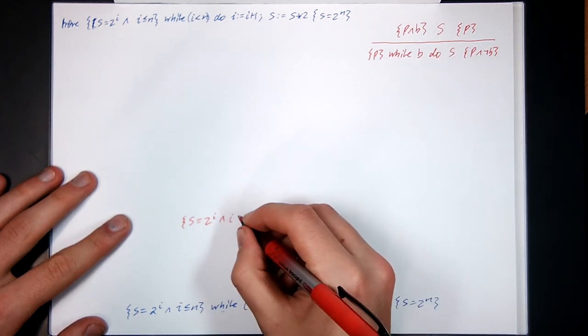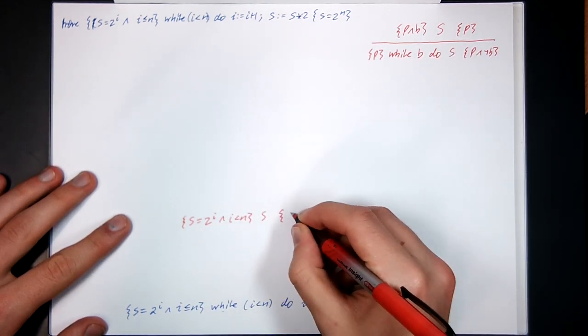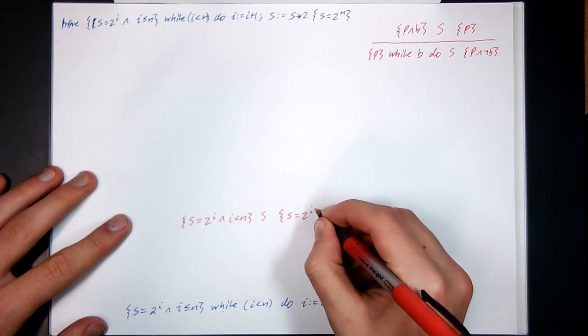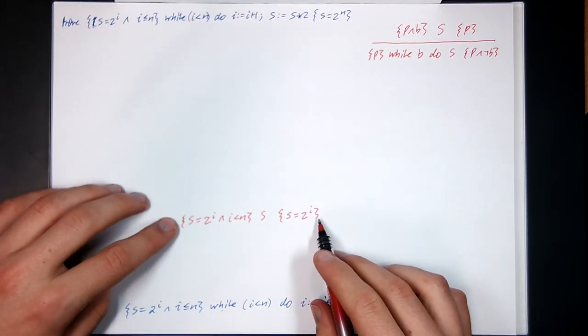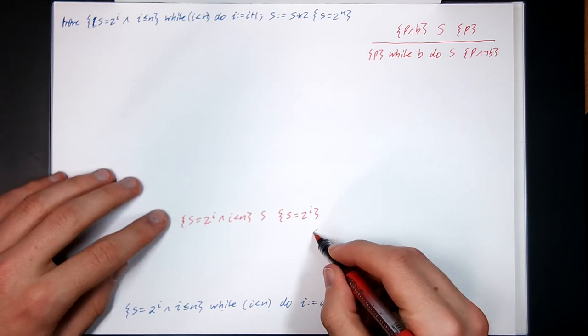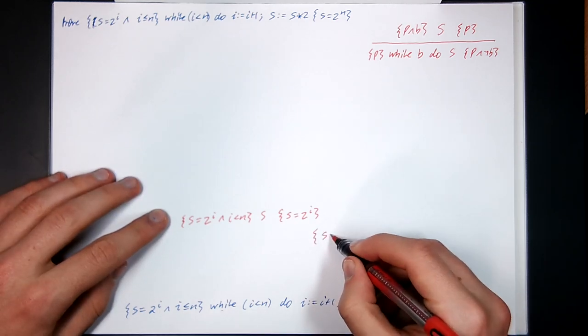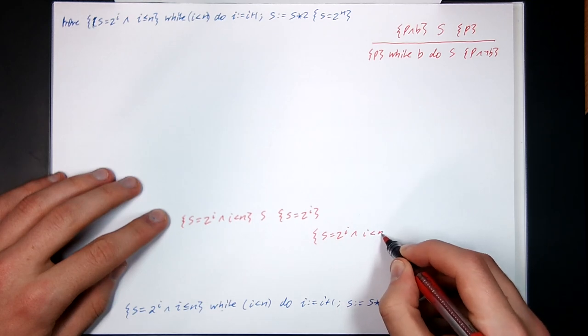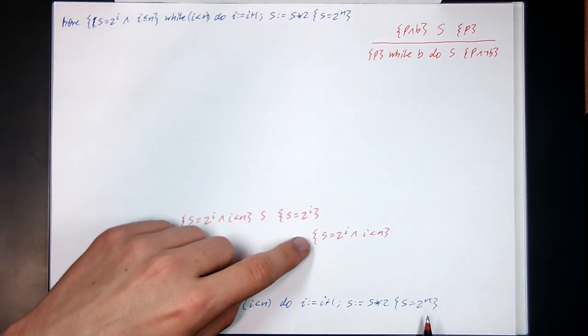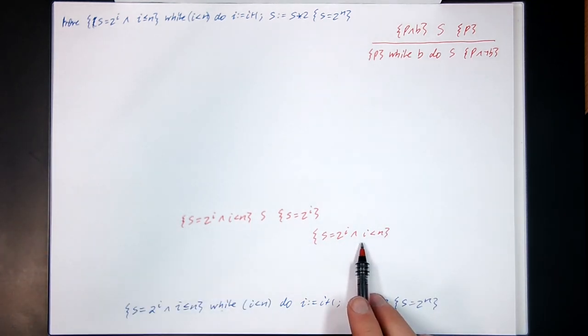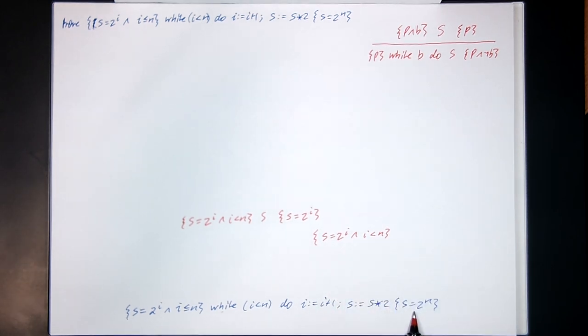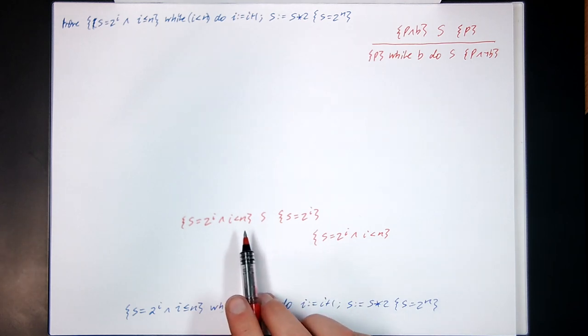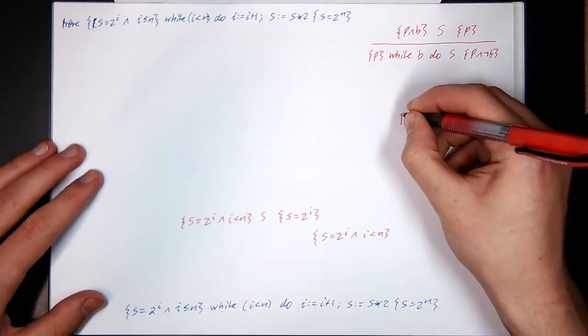Do the code S, S equals 2 to the I. If I do this and then do the while rule, my post condition is going to be of the form S equals 2 to the I and I is strictly less than N. I'm not going to be able to weaken this down to this because if you assume this, it doesn't necessarily imply that. So that means this invariant here is too weak. It's not good enough.